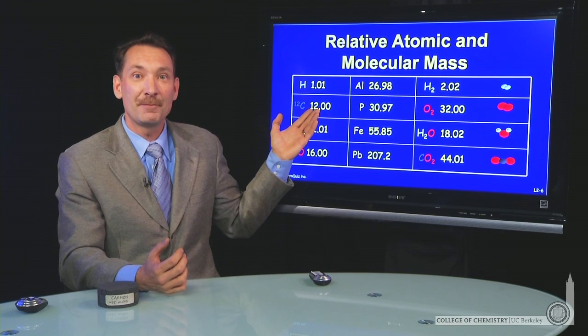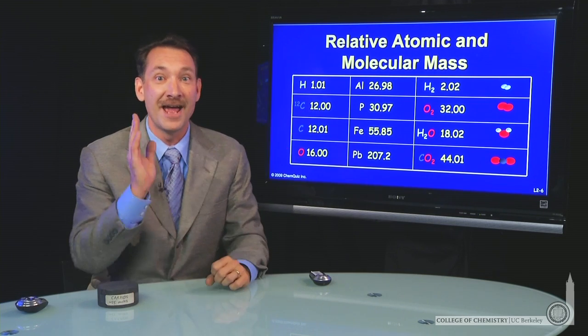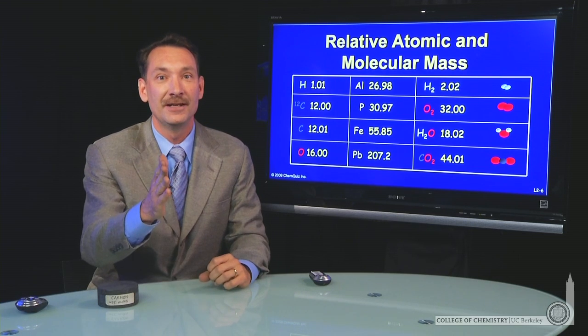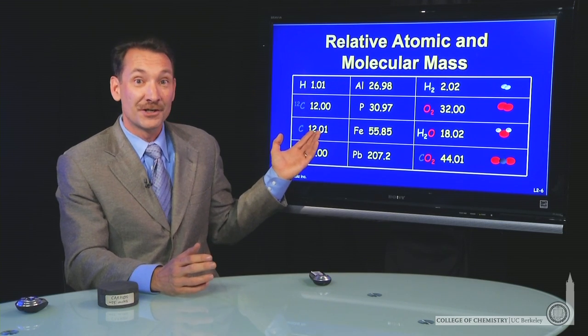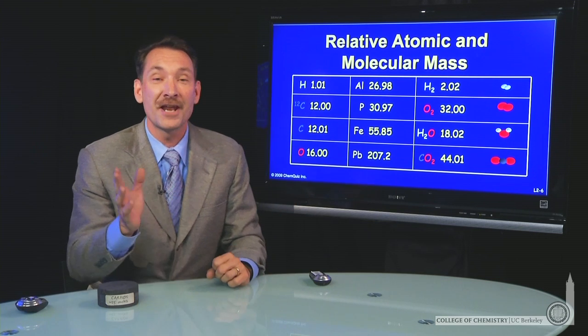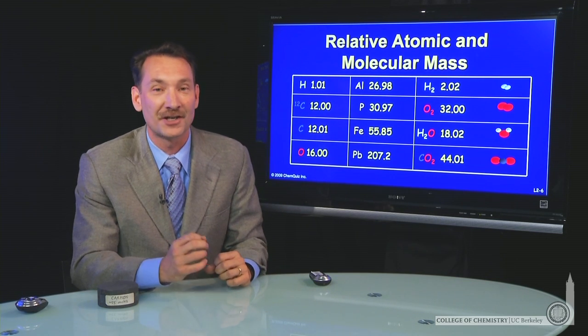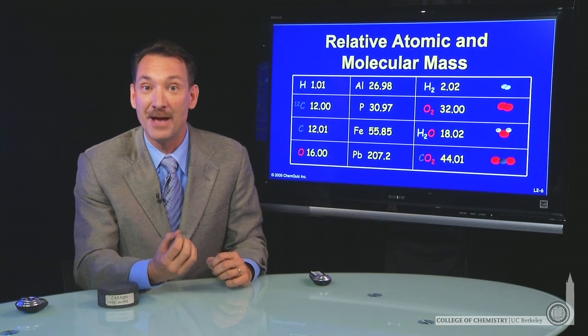That's because I could take a sample of pure carbon-12, where every atom is carbon-12, and that would have mass 12. But in naturally occurring carbon, one out of every 100 atoms is a carbon-13. It's slightly more massive.